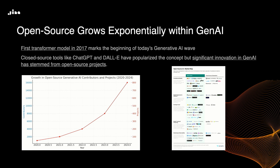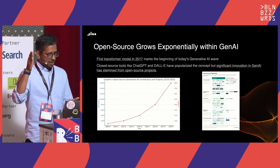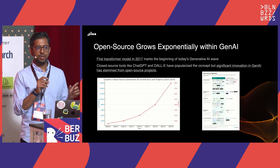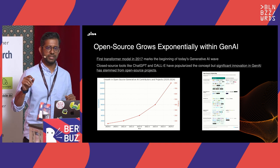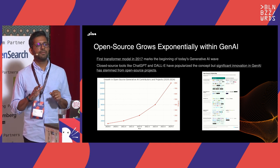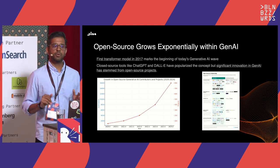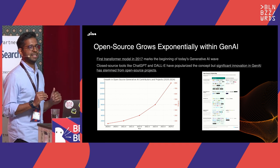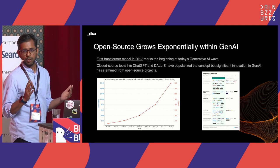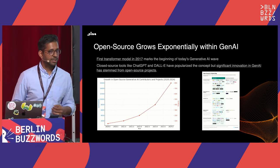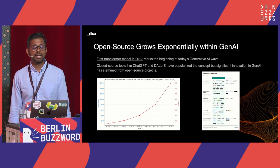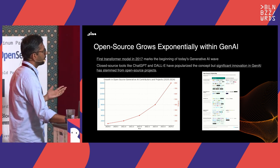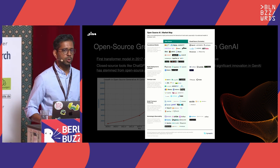Instead of looking at data timestamp by timestamp, transformers allowed you to look at the entire sequence at once — like looking at an entire musical sheet. This shifted the problem from next-token prediction to fill-in-the-blanks: by seeing everything past and future, you predict what a blank should be. It was a massive paradigm shift, and the coolest thing about transformers was that it was open source. All popular LLMs today, including ChatGPT, are based on the transformer architecture.